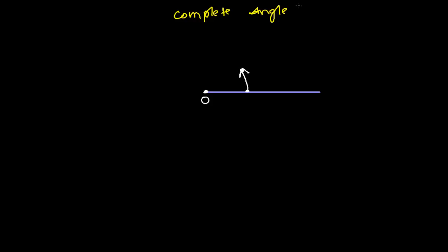When I reach a certain point, I think about how much angle I have made with reference to my initial line. I imagine a straight line from there back to the origin. At that time, the angle I have made is known as an acute angle.